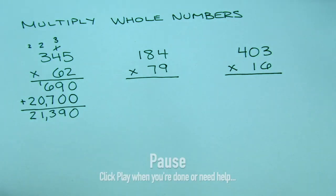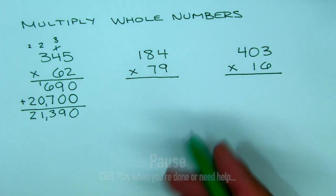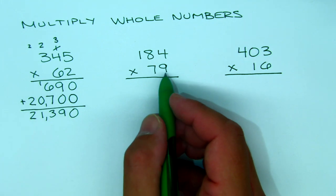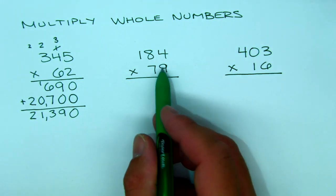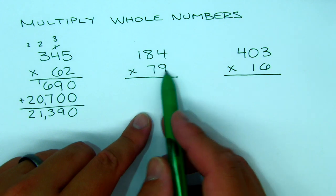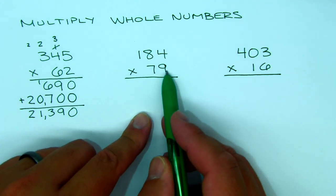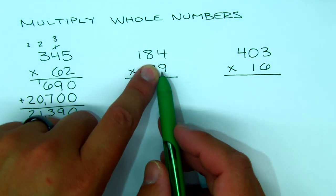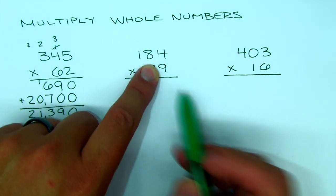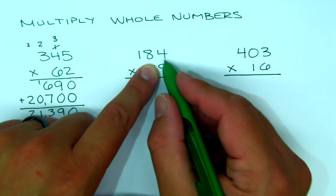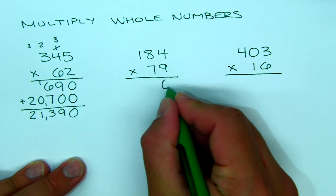Pause the video again and we'll take a look at the second one. All right, we're back — 184 times 79. Very similar to the first one. We're going to break apart the 79 into 9 and 70, starting with the 9 and ignoring the 7 for a minute.